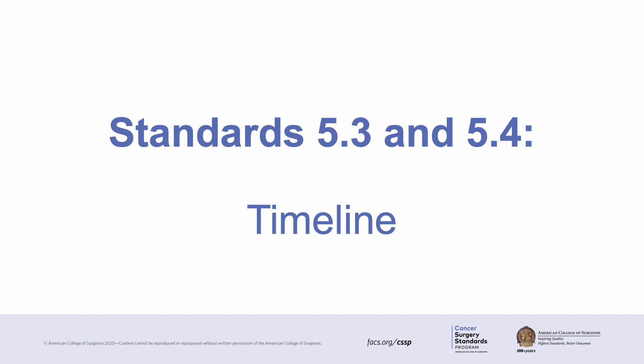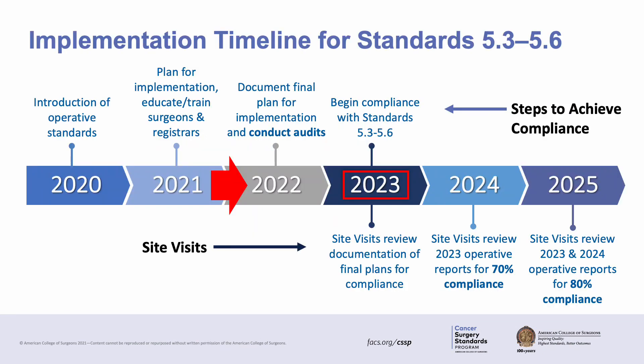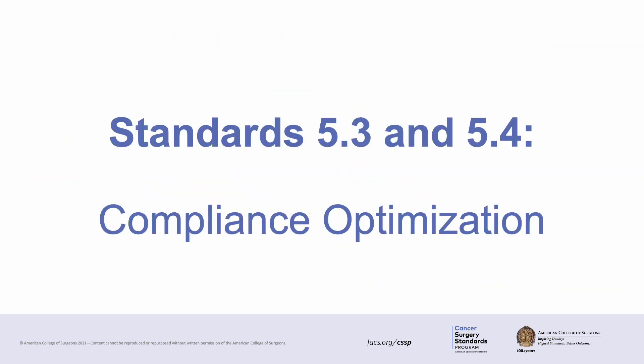We will now discuss the timeline of implementation of the standards and measures of compliance. As of 2022, sites were required to document final plans for implementation of these standards and to conduct internal audits. Site reviews began in 2023 and are assessing final plans for compliance. Site visits in 2024 will assess operative reports from 2023 with a goal compliance of 70% for the initial site visit. In 2025, reviewers will assess for 80% compliance with these standards. We will now discuss some strategies to optimize compliance with these standards.